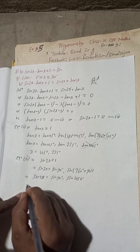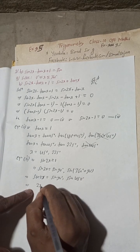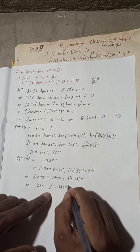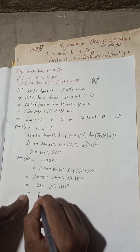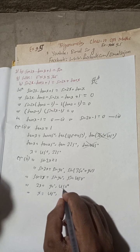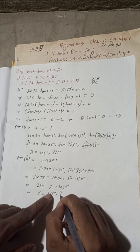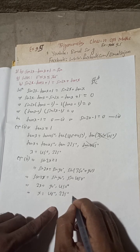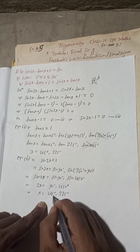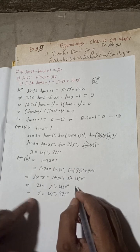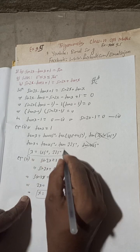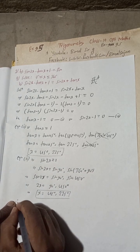This implies 2x = 90° or 2x = 450°, so x = 45° or x = 225°. We get the same values from both equations — 45° and 225°.